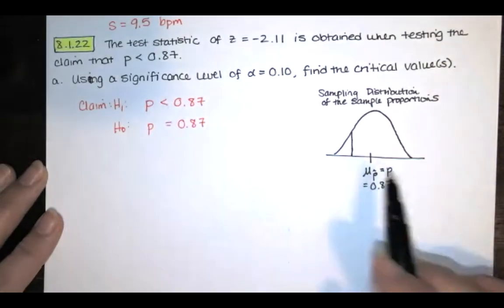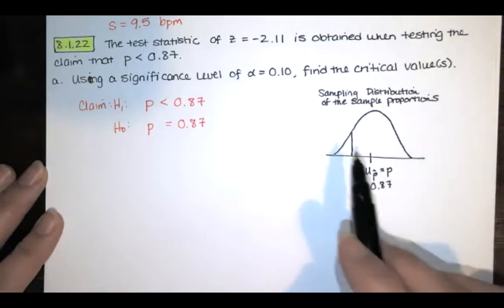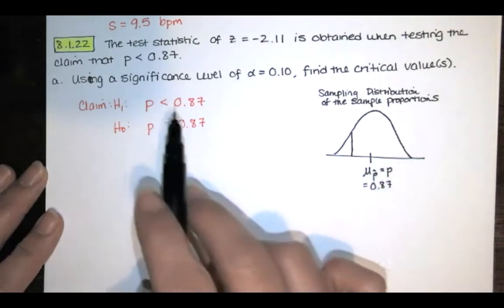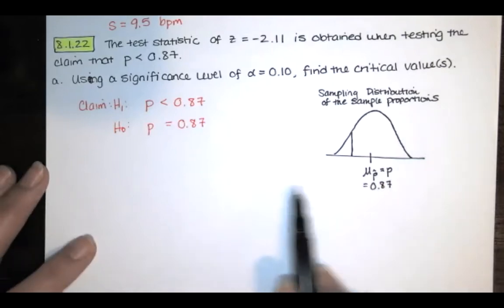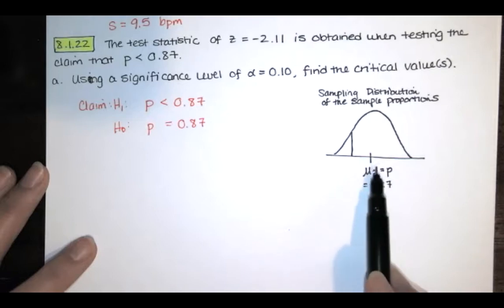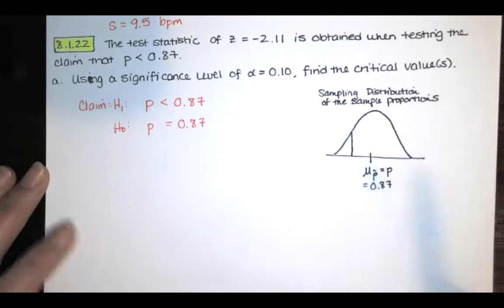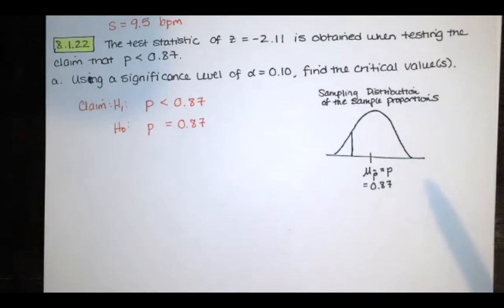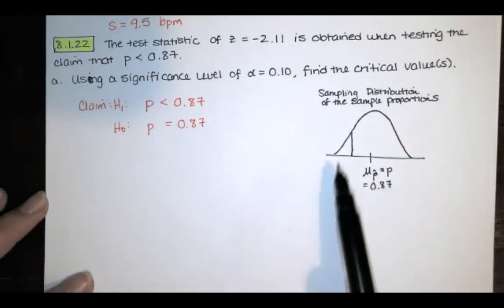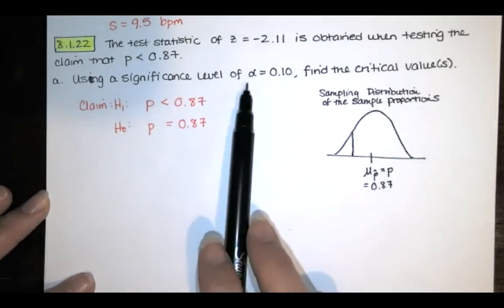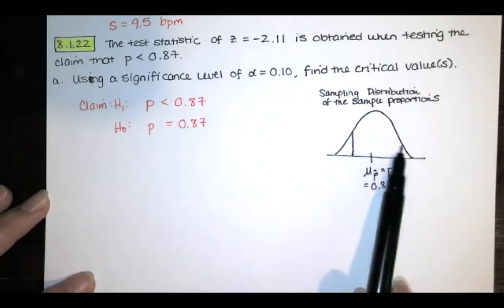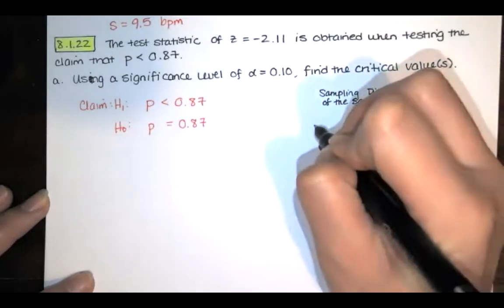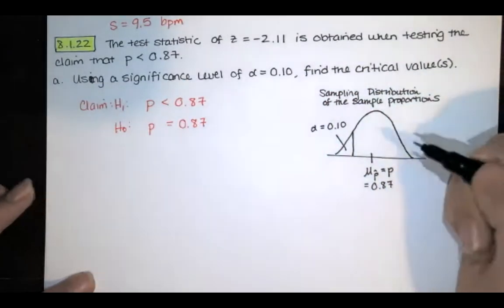That inequality sign always points in the direction of the critical region, and the critical region is on the left. If it was a not-equal sign, we'd have alpha split into two tails. If it's a less than sign, we have a left-tailed test; if it's a greater than sign, we'd have a right-tailed test. We've got a sampling distribution of sample proportions, assuming the mean equals the population proportion of 0.87. Our critical region separates an area of alpha from the rest — so in a left-tailed test, this region has area equal to alpha.